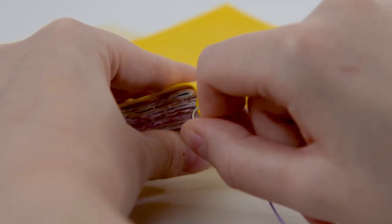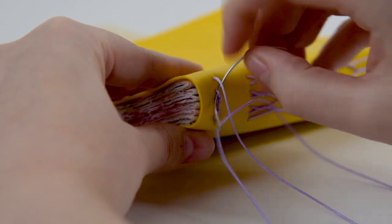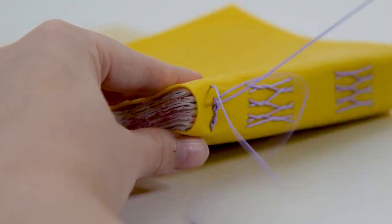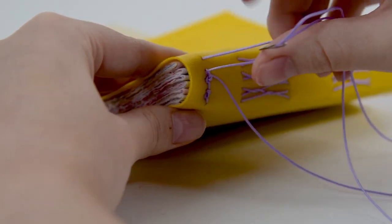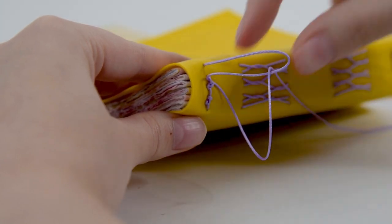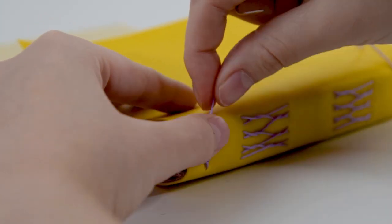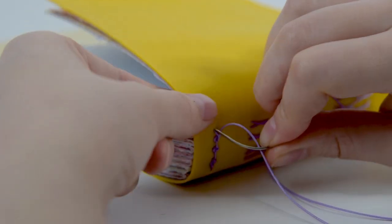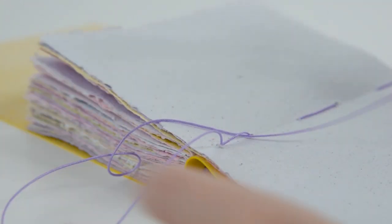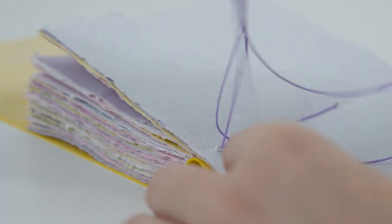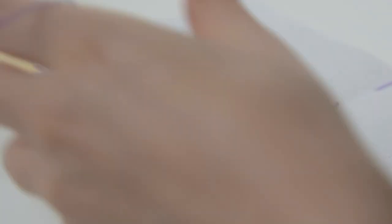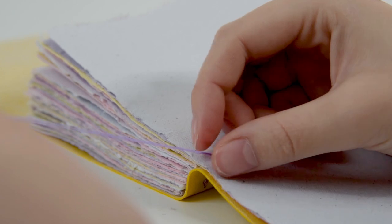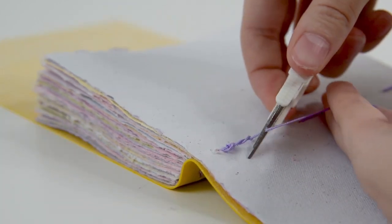Then just create a knot like normal. And instead of going one up, you go back inside and tie it off on the stitch there. Tuck it under and cut off the excess.